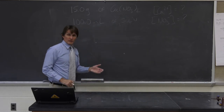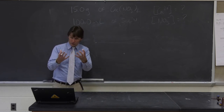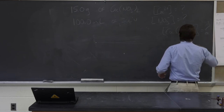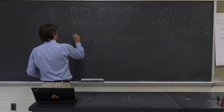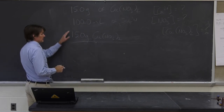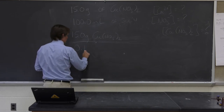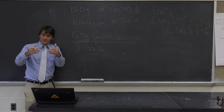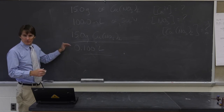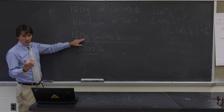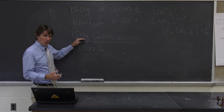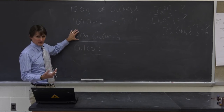First I'm going to find the molarity of copper(II) nitrate — the whole compound. I have 15 grams of copper(II) nitrate in 0.1 liters — 100 mL is 0.1 liters. I've started the problem by writing information as amount per volume. I don't have molar units yet, and that's what we want, so instead of grams per liter I want moles per liter. I have to convert the numerator from grams to moles, so I need the molar mass of Cu(NO₃)₂.